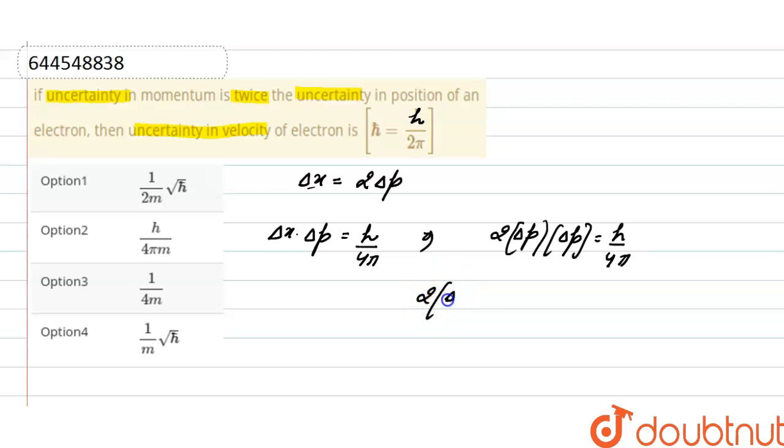And we can write this as 2 into delta p to the whole square equals h divided by 4 pi. And now we can write this as delta p to the whole square is equals to h divided by 4 into 2 pi.